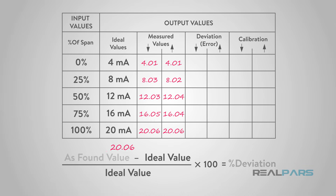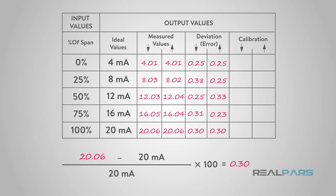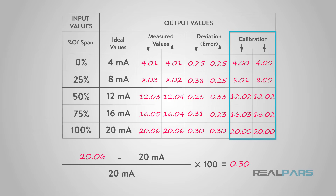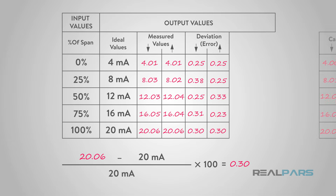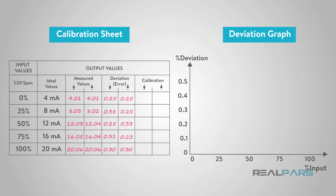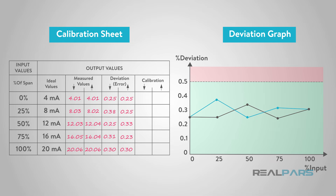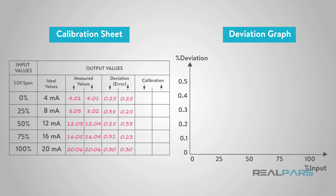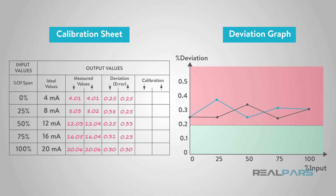The deviations at each checkpoint are calculated and compared to the deviation maximum allowed for the device. If the deviation is greater than the maximum allowed, then a full calibration is performed. If the deviation is less than the maximum allowed, then a sensor calibration is not required. For example, if the maximum deviation tolerance is 0.5%, we see from the graph that the deviations are all less than 0.5%, so no additional calibration is required. But if the maximum deviation tolerance is 0.2%, and some deviations exceed that, then a sensor calibration is required.